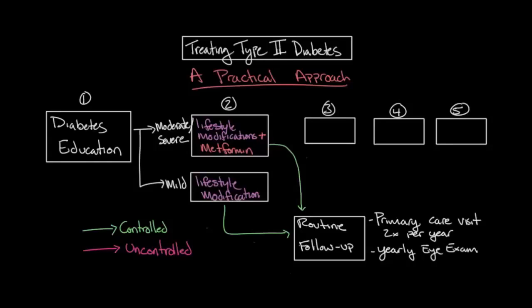However, if their hemoglobin A1c is not improved and their diabetes is not well controlled, then a second-line medication should be added to their regimen. The type of medication may vary by individual, and so this decision should be discussed with one's primary care provider.